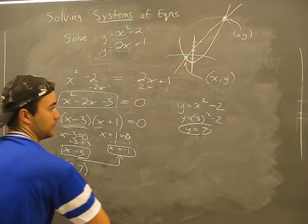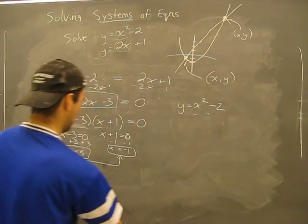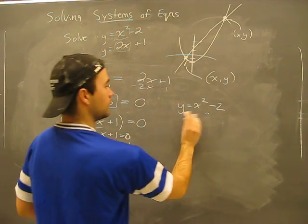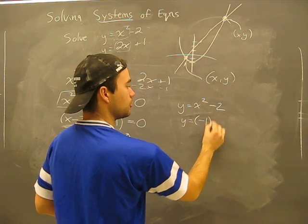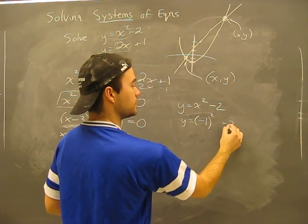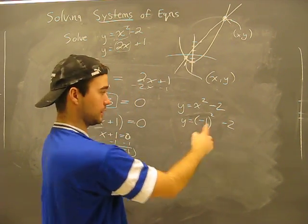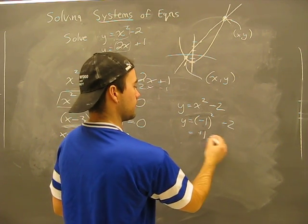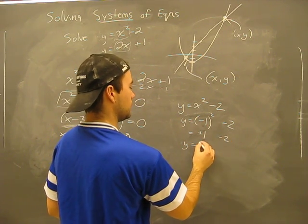Okay, now let's try the other one here, which is a negative one. Okay, y equals negative one in brackets squared minus two. This really becomes positive one minus two, okay, y equals negative one.